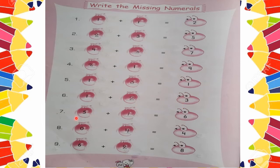Next: 5 plus space is equal to 6. Start counting from 5: 5, 6 — that's 1 step. So here we write 1. 5 plus 1 is equal to 6.